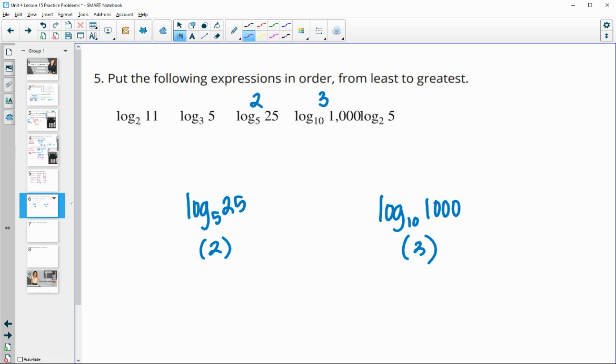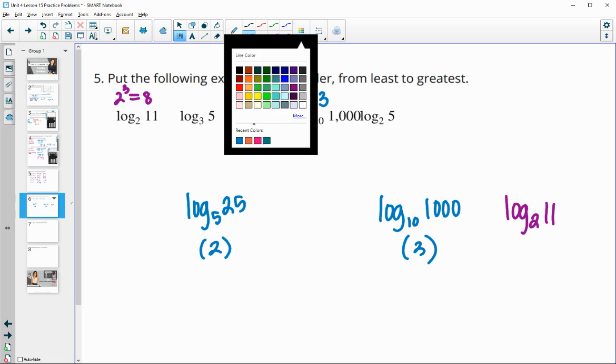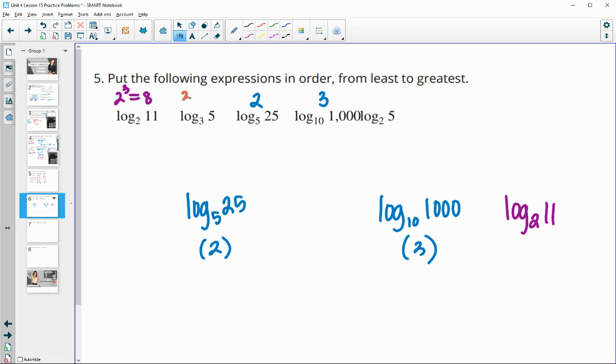So 2 to what power gives us 11? Well, 2 to the third is 8. So it's going to be higher than 3 since 2 to the third is 8 and 11 is larger than 8. So we know that one's going to go on this side of log base 10 of 1,000. Next one, 3 to what power gives us 5? Well, 3 to the first is 3 and 3 to the second is 9. So it's going to be between 1 and 2. So this one's going to be less than log base 5 of 25. So log base 3 of 5 will be down here. And then final one is this one. It's kind of smushed in there. But 2 to what power gives us 5? Well, 2 squared is 4 and 2 to the third is 8. So this one is going to be between 2 and 3. So this one's going to be between log base 5 of 25 and log base 10 of 1,000.